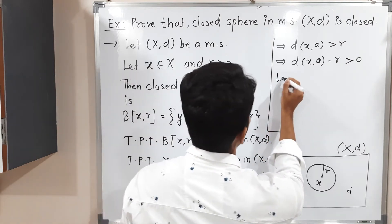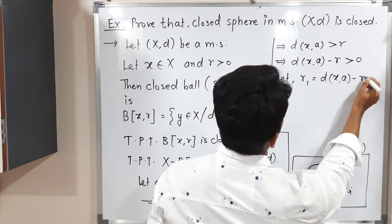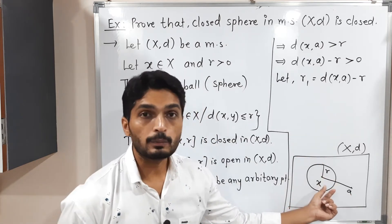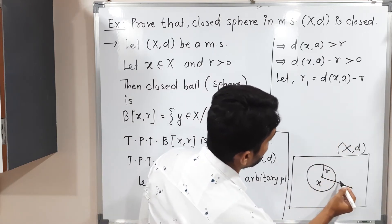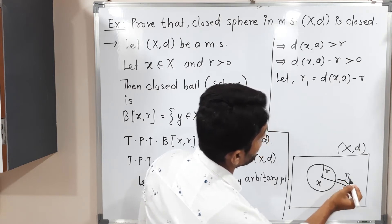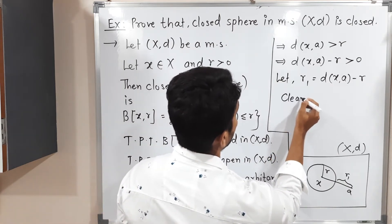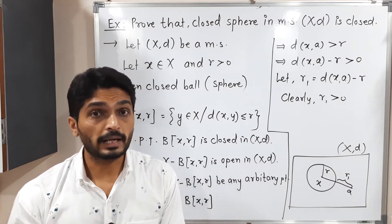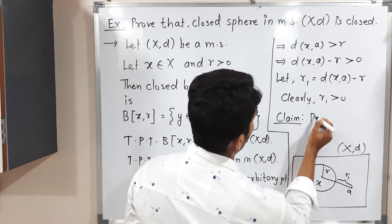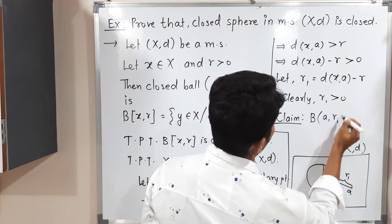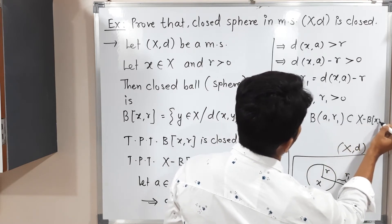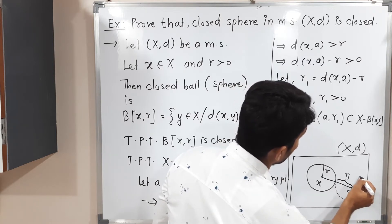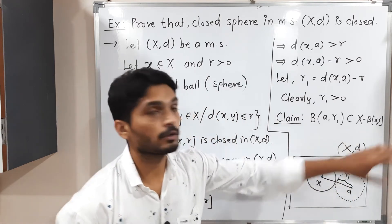Let R1 equal d(X, A) minus R. In the diagram, d(X, A) is the distance between X and A; subtracting R leaves the remaining part, which is radius R1. Clearly R1 is positive because d(X, A) minus R is positive. Now our claim is: the open ball with center A and radius R1 is a subset of X minus B(X, R) — that is, this open ball entirely lies in the complement of B(X, R).